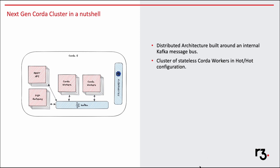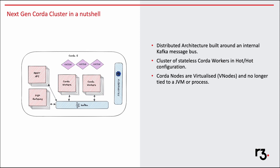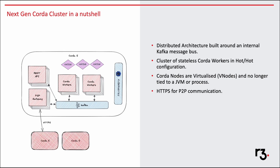Next-gen Coda is built around a Kafka message bus. Here we have a cluster of stateless Coda workers running in a hot-hot config. Nodes are now virtual nodes — they are not tied to a specific JVM process or a physical CPU, but you can think of virtual nodes as an execution context. This virtual node in a distributed environment is not useful unless they interact with other peers on the network. We no longer use AMQP Artemis for peer-to-peer communication; now we use HTTPS for peer-to-peer communication. All the interaction to the node from the outside world, like requesting to start a flow or node administration, is exposed via a REST API.